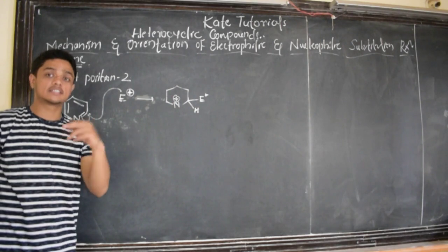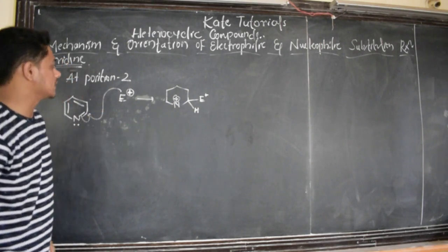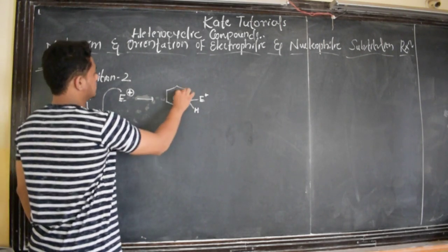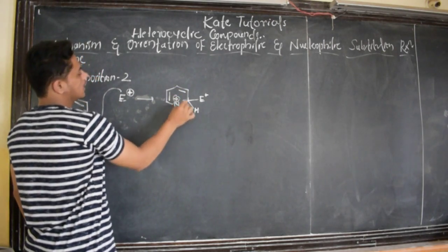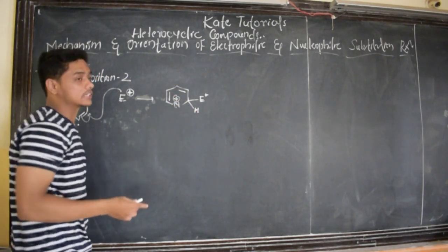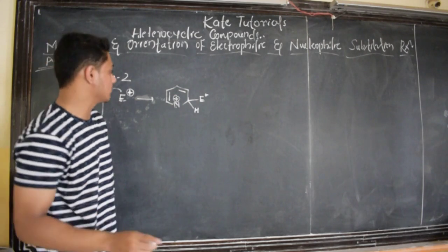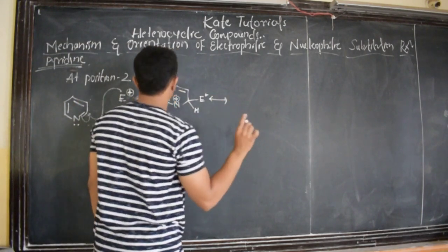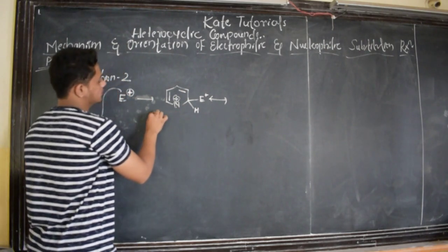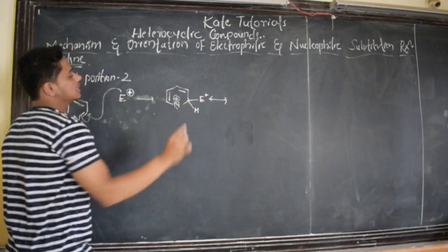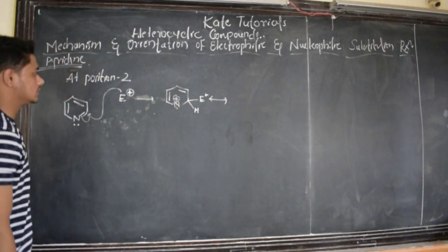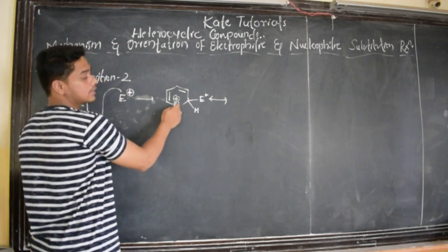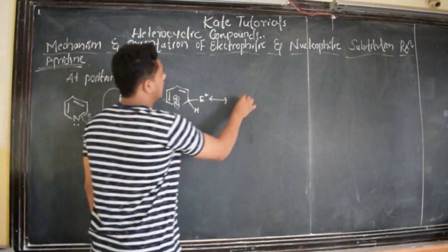The electrophile only attacks at the third position. Because of this unstable situation — positive charge on the electronegative atom, that is nitrogen — this kind of attack will not take place. Electrophile will not attack at the second position because nitrogen gets positive charge. And there can be resonance, no problem, but the positive charge on nitrogen will be unstable.